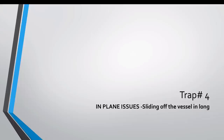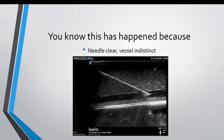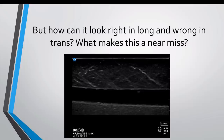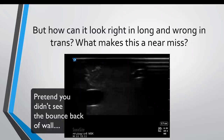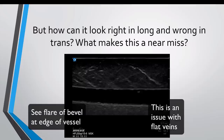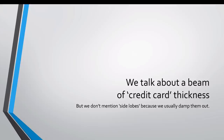Trap number four is when you think you're in the vessel — it looks like you're in the vessel but you're not getting any flashback. A common scenario is when you're trying to cannulate a fairly small and fiddly radial artery. This problem almost always happens in longitudinal. Although the needle looks like it's smack bang in that vessel, in actual fact it's not. Here's an example: it looks like we're in the vessel in long, perhaps not quite in the middle, but when we turn 90 degrees on the vessel you can see I've just skimmed down the outside.